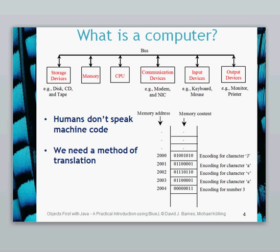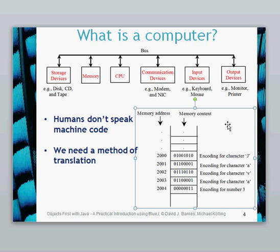The other thing is that computers only understand binary languages — zeros and ones are all that computers understand. They don't understand any other language, so we have to try and convert into this. We need a method of translation to convert into this binary machine code. Memory, which is shown in this picture here, has a memory address and memory contents.